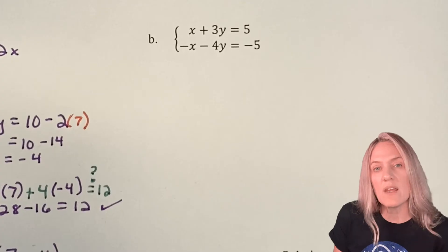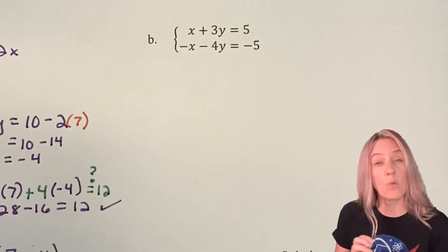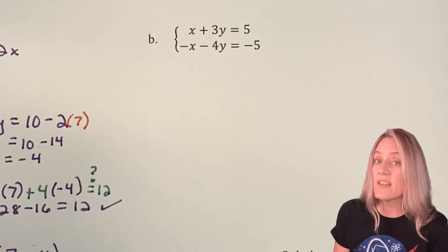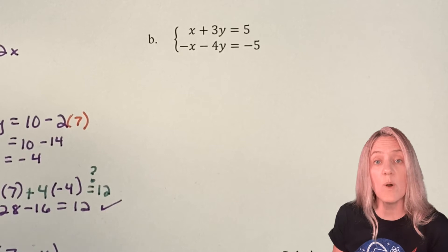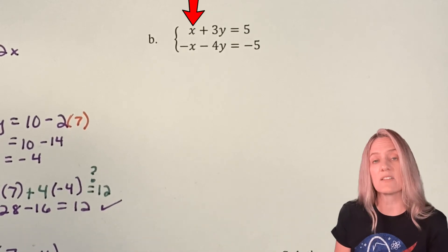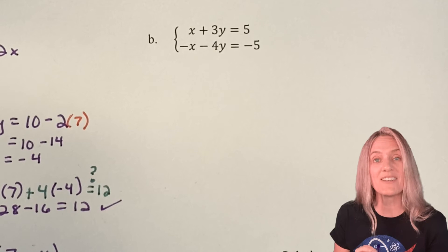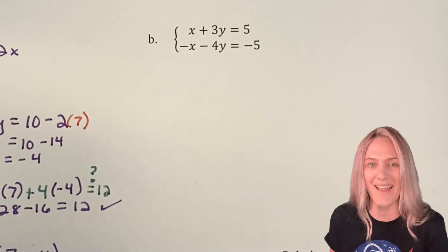On example B, is one of the equations solved for one of the variables? No, not yet. But do we have one of the variables with a coefficient of 1? Yes, in equation 1, x has a coefficient of 1. So I'm going to solve equation 1 for x.